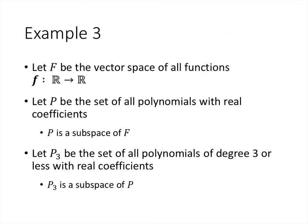Earlier we talked about the vector space of all functions from the real numbers to the real numbers. If we look at the set of all polynomials inside that space — polynomials are functions, so that's a subset, and it's also a subspace: adding two polynomials gives another polynomial, multiplying by a scalar gives another polynomial, and the zero function f(x) = 0 is a polynomial. Furthermore, inside the set of all polynomials, the set of all polynomials of degree 3 or less is also a subspace, since adding or scaling such polynomials stays within degree 3, and the zero polynomial qualifies.